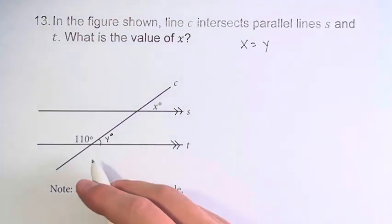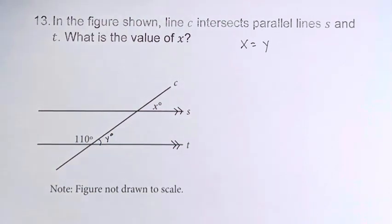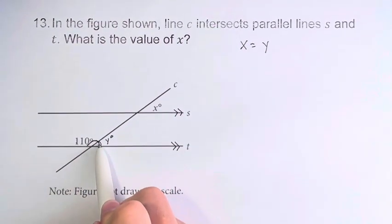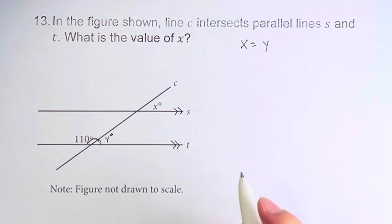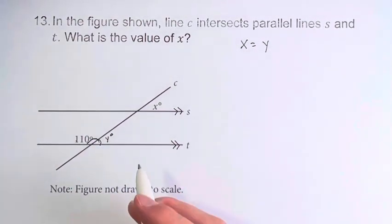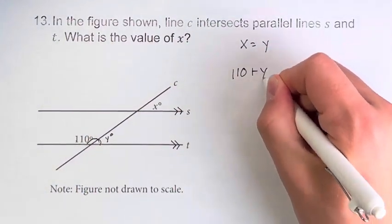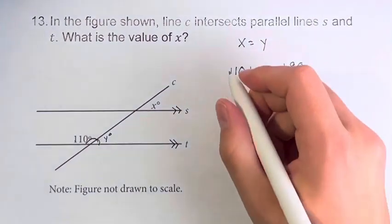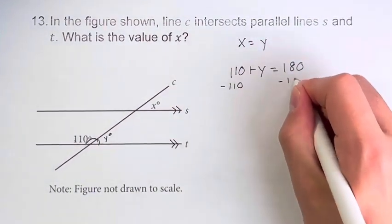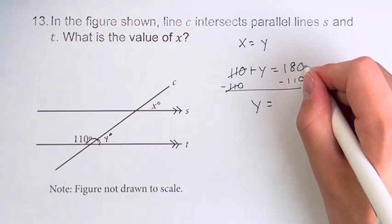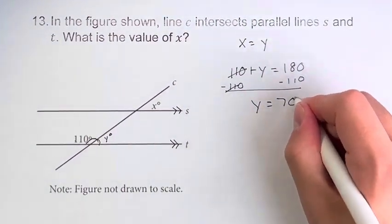How do we find Y? Well, we know that this angle is 110 degrees. And 110 plus Y — I draw the little circle right here — we can see that these form one big angle, which is just a straight line, which is 180 degrees. These are supplementary angles, you can call them. Therefore, 110 plus Y equals 180. Subtract 110 from both sides, which cancels these, and we're left with just Y on its own, equal to 180 minus 110, which is 70.